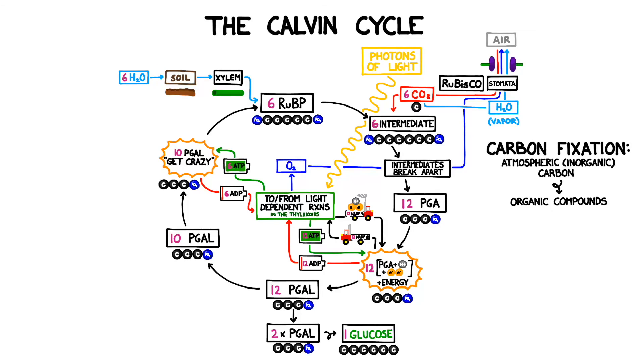So there we have it. We've taken photons of light, carbon dioxide, water, and some ATP, and converted it into glucose and oxygen. Photosynthesis is definitely complicated, but without it, we wouldn't be able to exist.